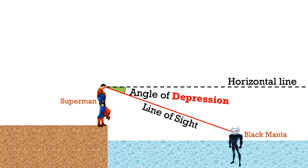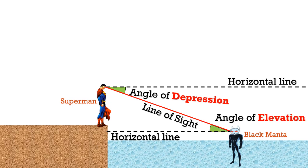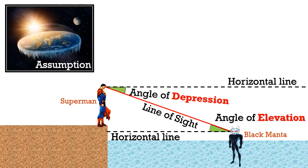Similarly, when Superman looks down at Black Manta, his line of sight forms an angle of depression with the horizontal line. And from Black Manta's point of view, when he looks up at Superman, his line of sight forms an angle of elevation with the horizontal line. We can say that these two angles are the same for small distances, because we can assume that the Earth is flat locally.